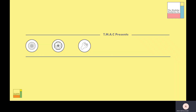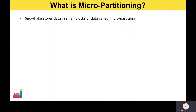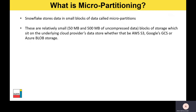So, micro partitioning and clustering in Snowflake — what is micro partitioning? If you're new to that concept, it might be worthwhile checking out my Snowflake architecture for beginners video. Snowflake stores data in small blocks of data called micro partitions, which are effectively small blocks of storage sitting on the underlying cloud provider's data store — that could be AWS S3, Google Cloud data storage, or Azure Blob.